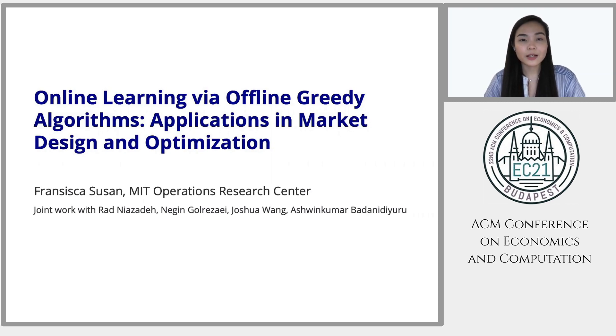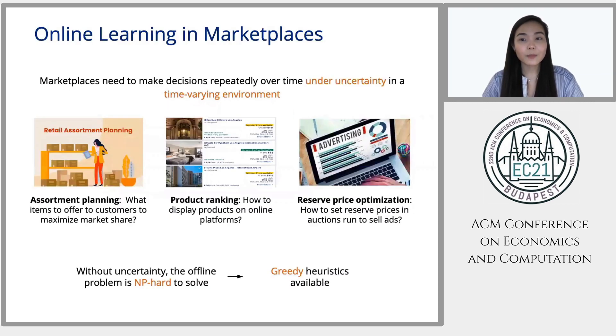So we'll start with some motivation. Nowadays, marketplaces need to make certain decisions repeatedly over time under uncertainty that also changes over time. For example, in the assortment planning problem, a store needs to decide on which items to offer to customers to maximize their market share. Yet the store doesn't know what the customers want ahead of time. Also, customer preferences and taste are changing over time.